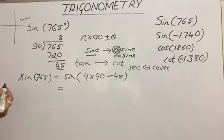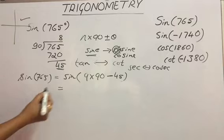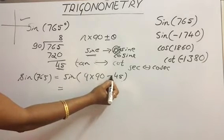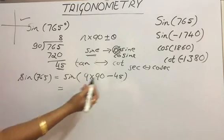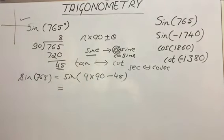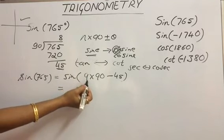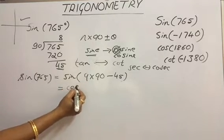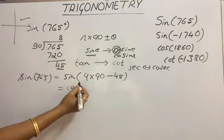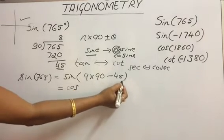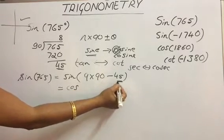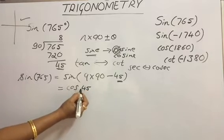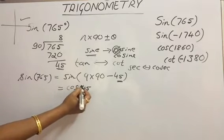Now let's consider sine 765, that is sine of 9×90 − 45. Since 9 is an odd number, after applying the co-ratio rule, sine converts to cos. So we have cos 45.